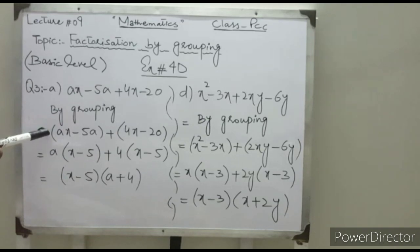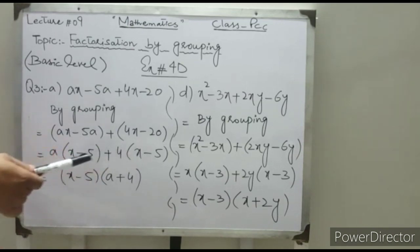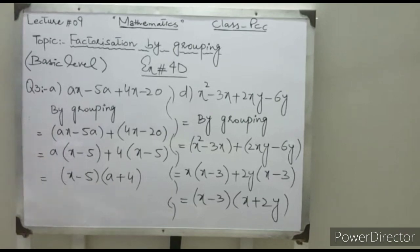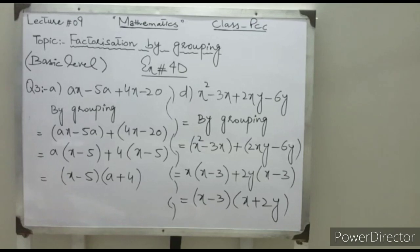In the first group, a is common; in the second group, 4 is common. Then (x minus 5) is a factor common to both groups. Take it common — the remaining is a plus 4. So the final answer is (x minus 5)(a plus 4).